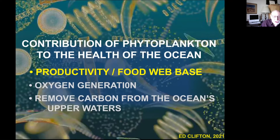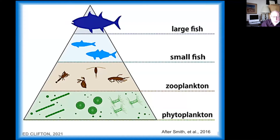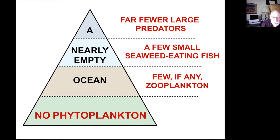Phytoplankton lie at the base of the food web. Virtually everything in the ocean either eats phytoplankton or eats something that eats phytoplankton. If we had no phytoplankton, it would be a very different ocean — few if any zooplankton, probably some small seaweed-eating fish and far fewer, maybe none, large predators.